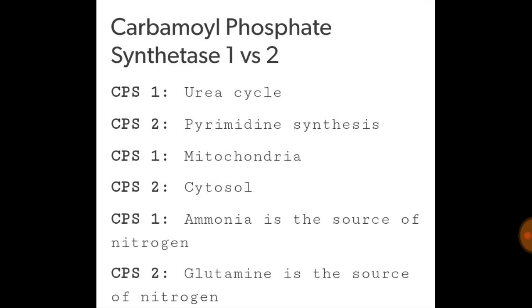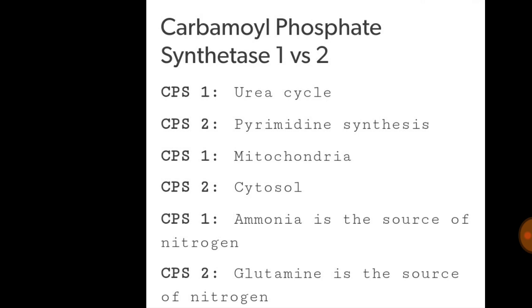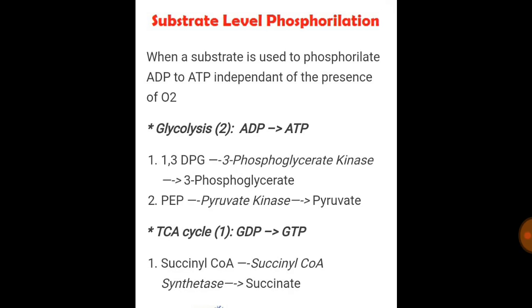CPS1 is present in mitochondria whereas CPS2 is present in cytosol. For CPS1, ammonia is the source of nitrogen, whereas glutamine is the source of nitrogen for CPS2. CPS2 is for pyrimidine synthesis, and CPS1 is for the urea cycle and is present in mitochondria.